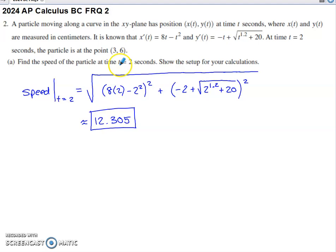Part A asks us to find the speed of the particle at time t = 2 seconds. Show the setup for your calculations. So if we had a velocity vector with this x component and this y component, the overall magnitude for that velocity vector would represent the speed of the particle. So this is a formula that you've likely used many times as you've been preparing for the AP exam.